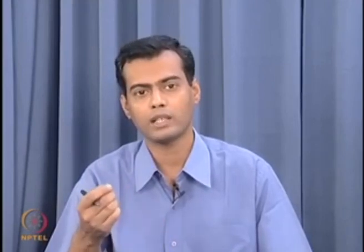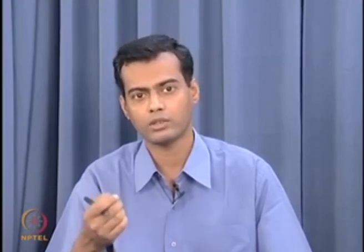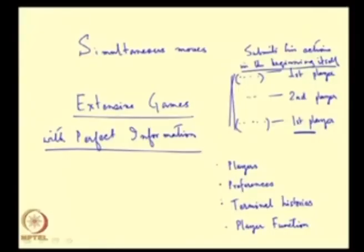The player function is defined only over proper sub-histories, because at a terminal history the game ends and no player can take an action. So for each proper sub-history — meaning after some sequence of actions has occurred — the player function tells us who is the player now able to make a move. These are the four components of an extensive form game. If I know these four components, I basically know everything needed about that game.